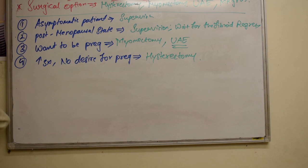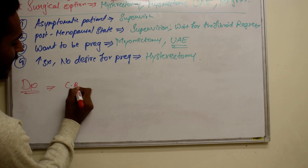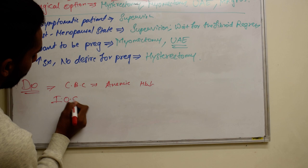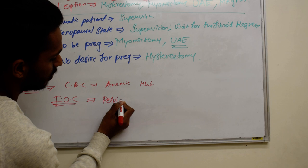Regarding diagnosis: if we go for a complete blood analysis, we'll find the patient is anemic and the hemoglobin level will be decreased. The investigation of choice is ultrasonography — pelvic USG. That was all about uterine fibroids.